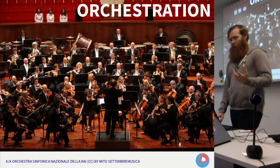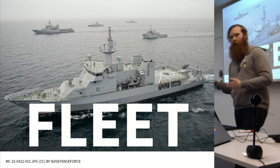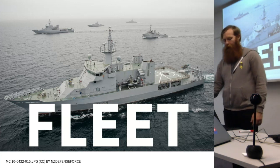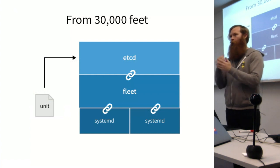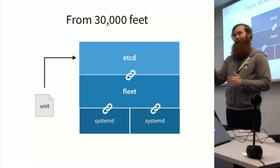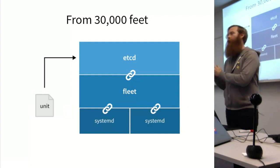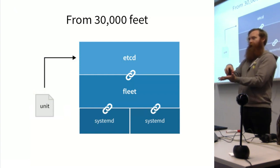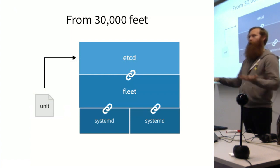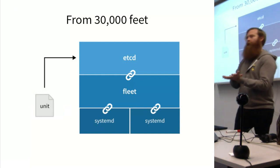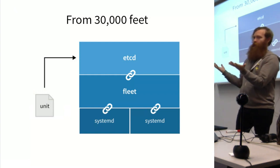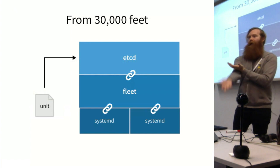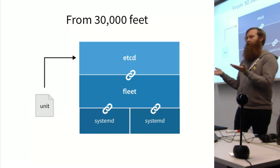Orchestration. Very early on, we created Fleet. Jonathan was one of the developers on it. What it is is just an abstraction layer on top of systemd that uses etcd to store systemd units. Fleet takes a systemd unit that should be run somewhere in the cluster, stores it in etcd, etcd has it replicated to all the etcd nodes so that information is highly available. If a host needs to go down for an update, another host can read that information out of the cluster and execute on it, bringing a copy of that service up and running again.